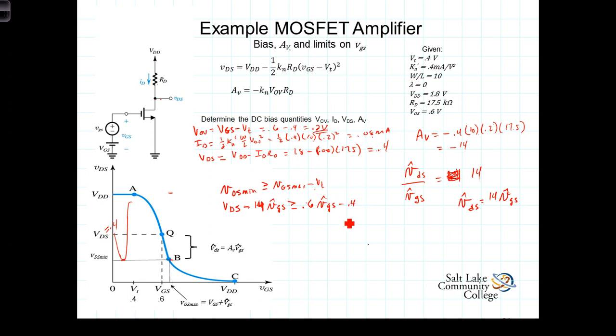So you can go through, VDS we know to be 0.4, minus 14 VGS hat, must be greater than or equal to 0.6 plus VGS hat minus 0.4. You go through and you do the math on this, an intermediate step would be then 0.6 minus 0.4 is 0.2, subtract 0.2 from both sides, gives us 0.2 on this side, must be greater than or equal to.